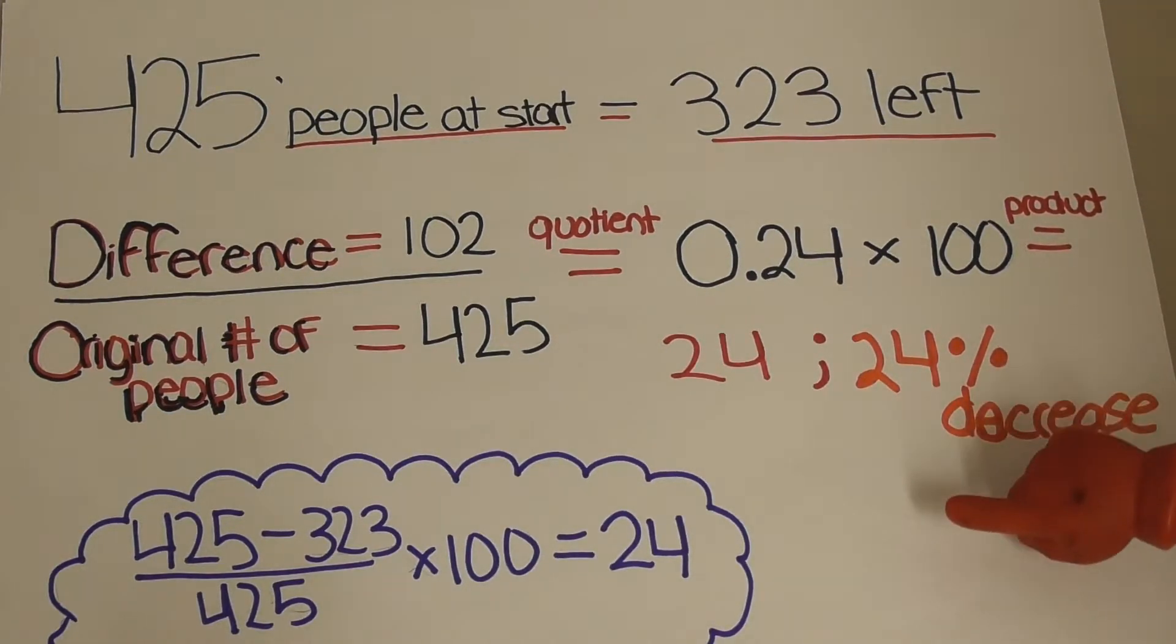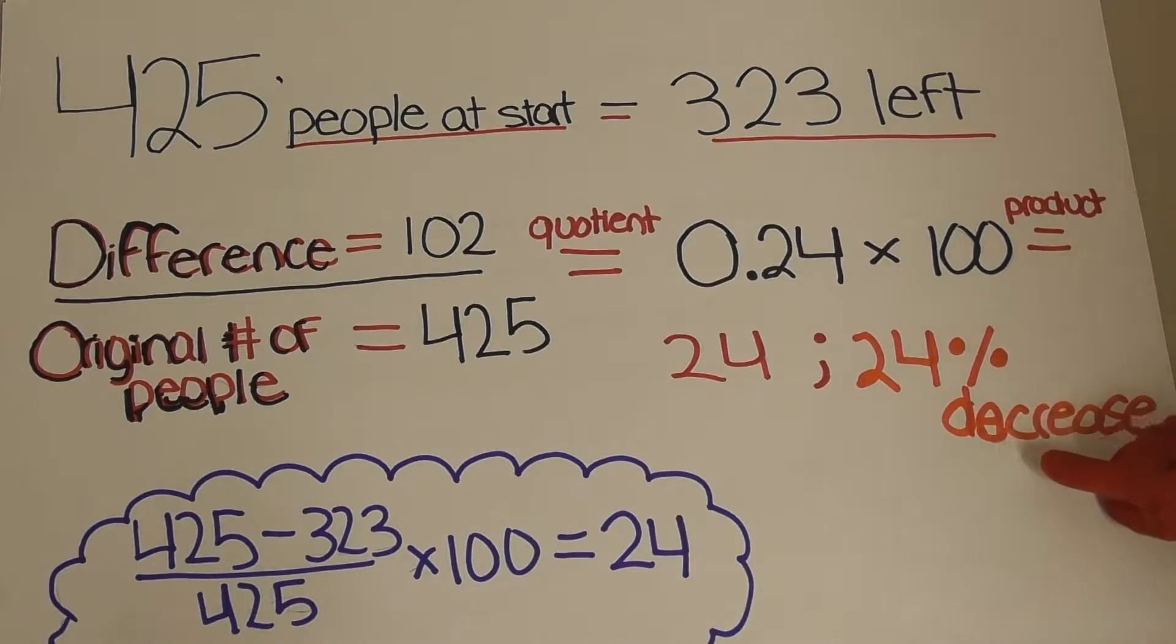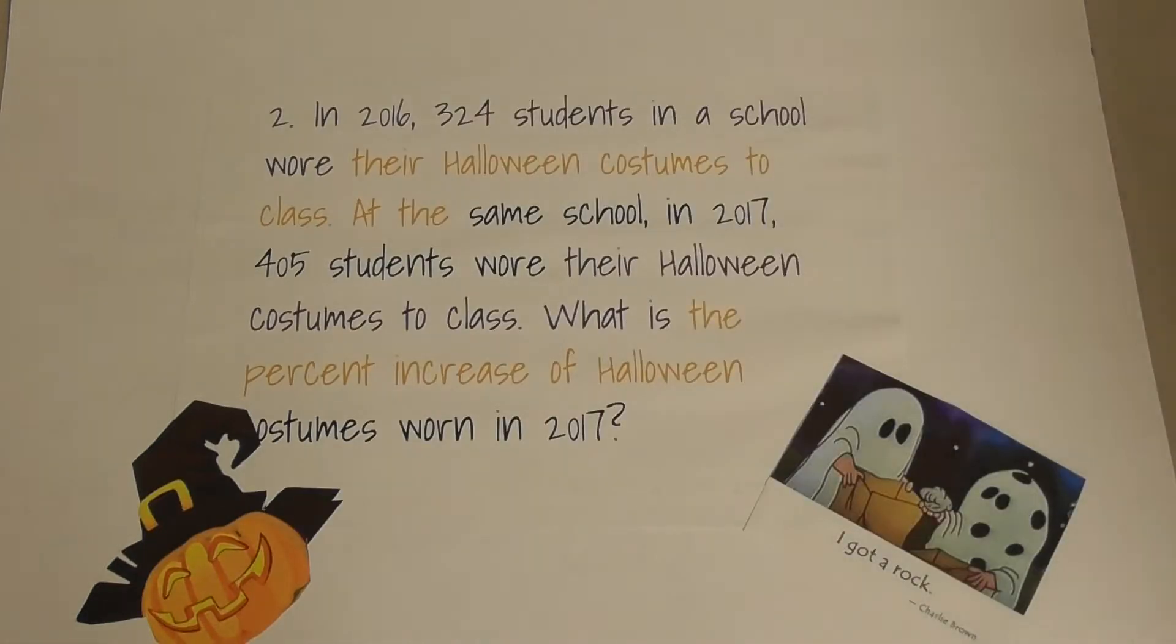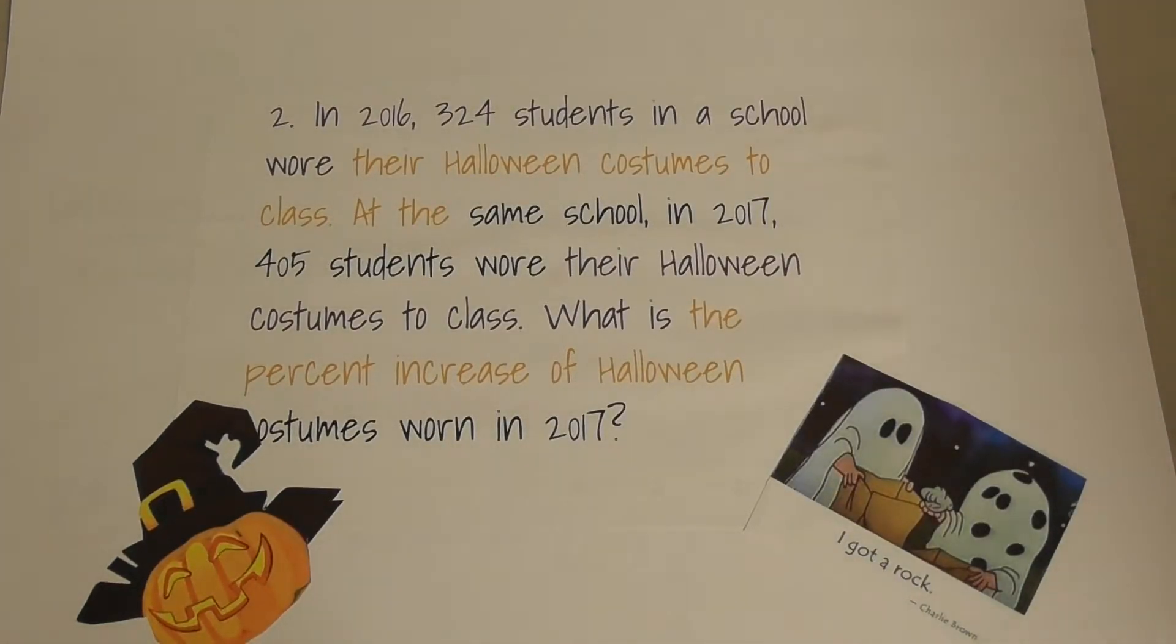This means that 24% of the people in the movies had left by the end, which is a decrease, and some percent change problems portray increases. To make sure you have an understanding of this method to find percent changes, I will demonstrate another problem.